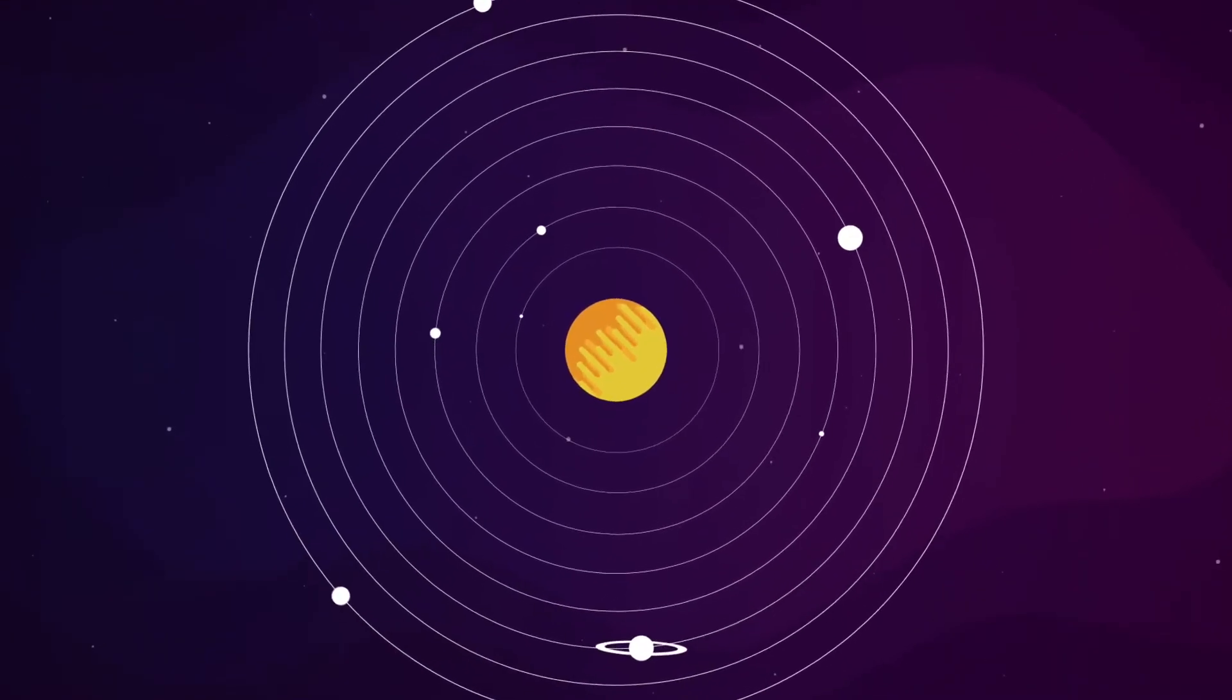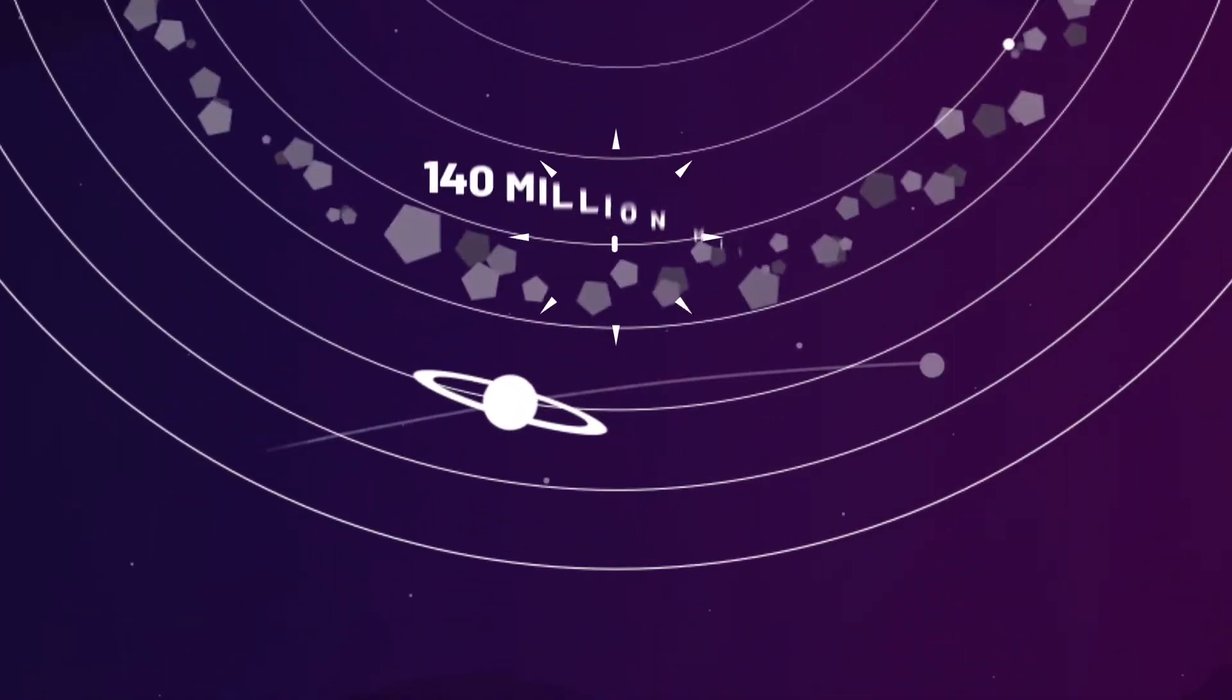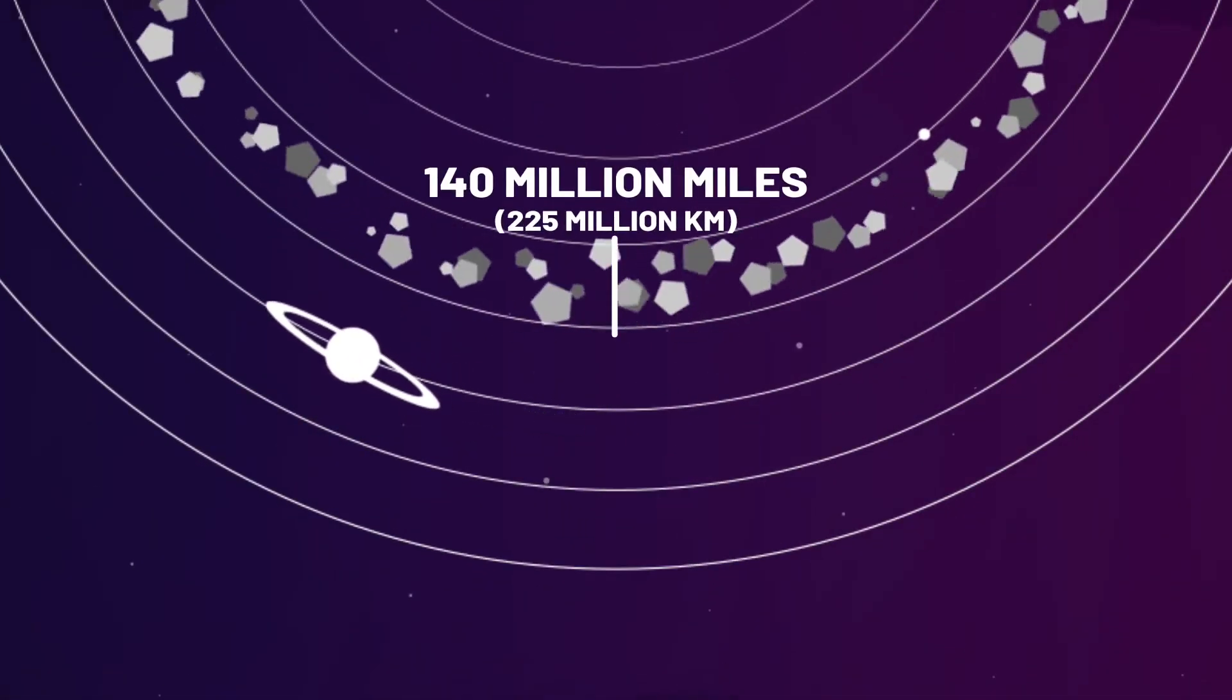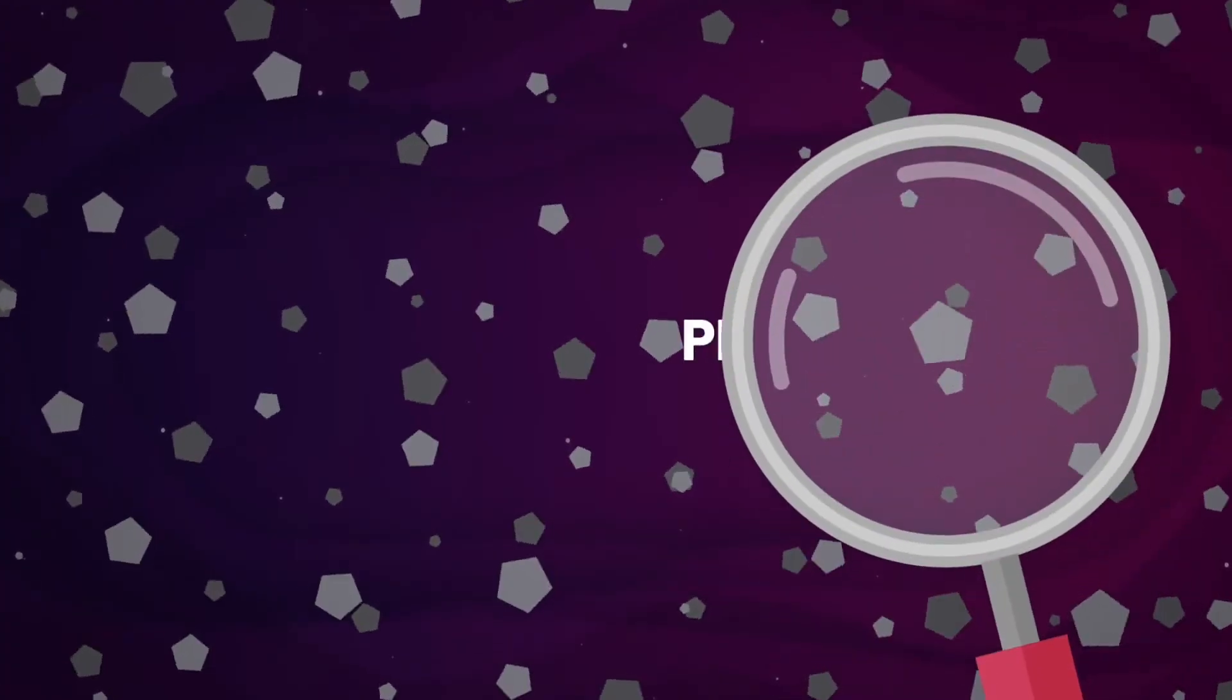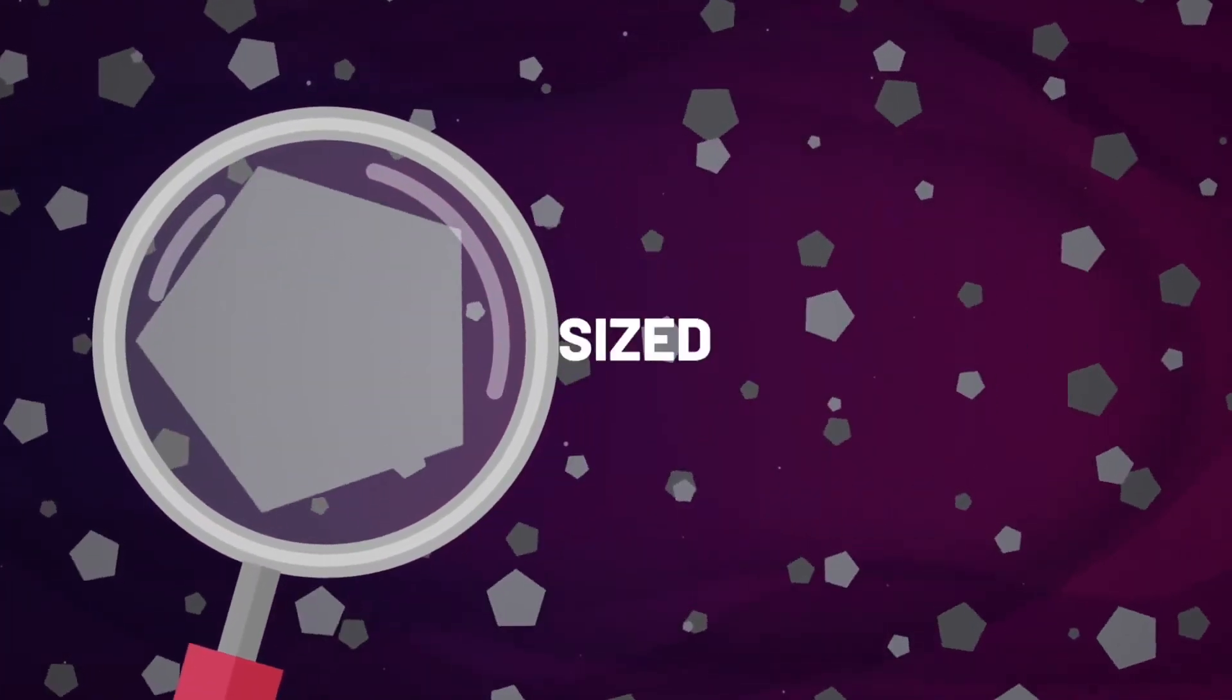The belt covers a massive spread of around 140 million miles between Mars and Jupiter. There are millions upon millions of asteroids roaming the belt, ranging from the size of tiny pebbles all the way up to small dwarf planets.